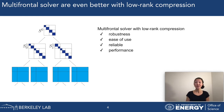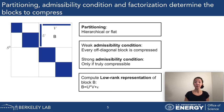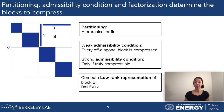How does this low-rank compression look? To the left, we see an example of a frontal matrix. The dark diagonal blocks will be dense, while everything on the off-diagonal can be low-rank compressed. We need to determine with which criteria we decide which blocks will be compressed.